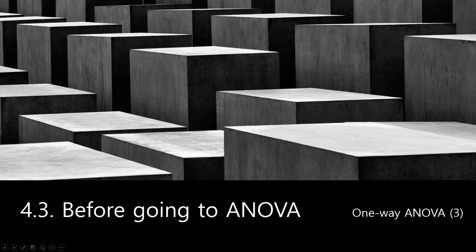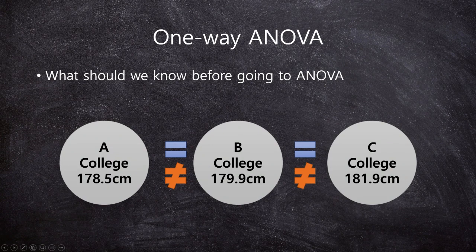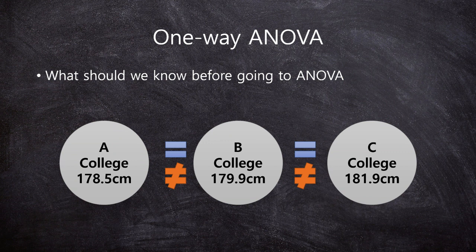Hi, I am Sapain Tia. This is a very introductory stat course for beginners. 4.3 Before Going to ANOVA, 1-way ANOVA 3rd. So far, we know why we should learn the new stat test one-way ANOVA. As we said, the multiple t-test is impossible because of the type 1 error. So we have to learn the new method, one-way ANOVA.